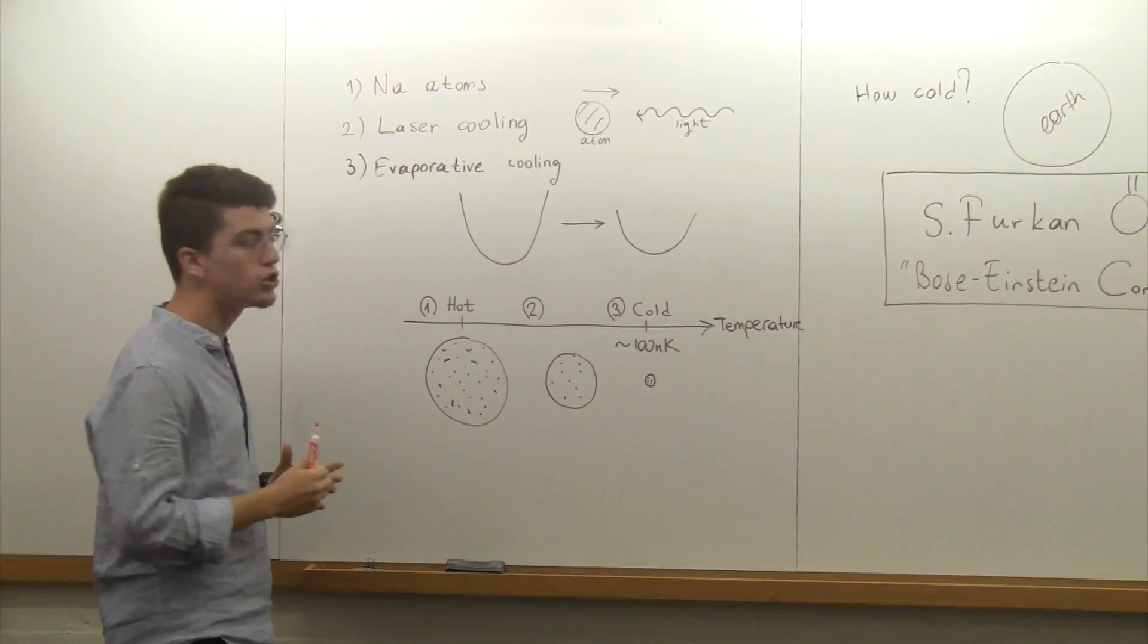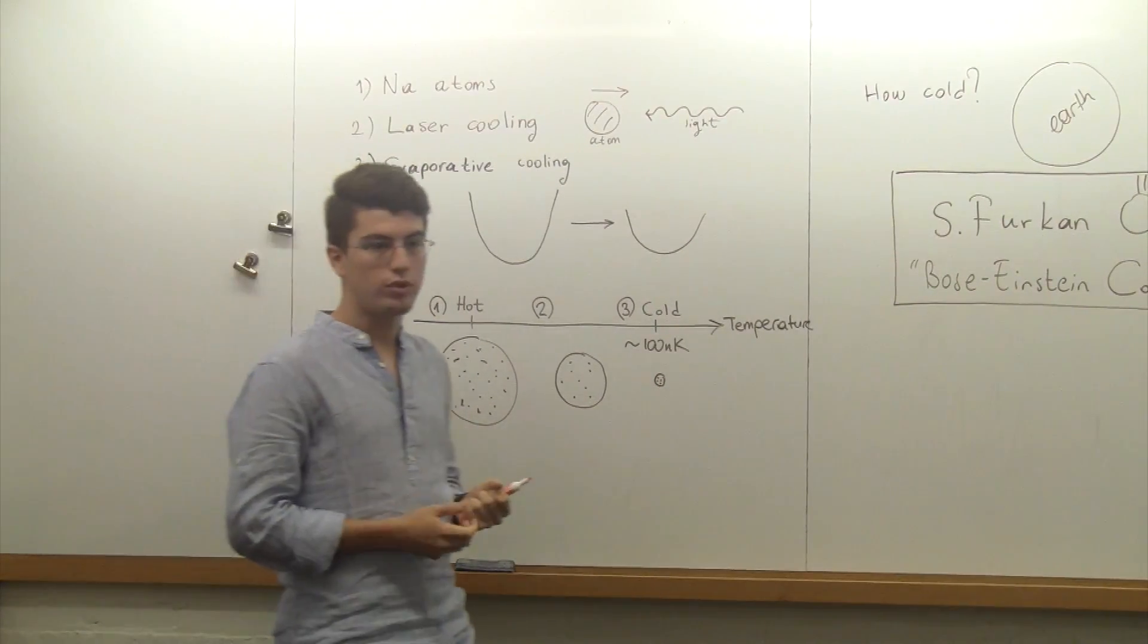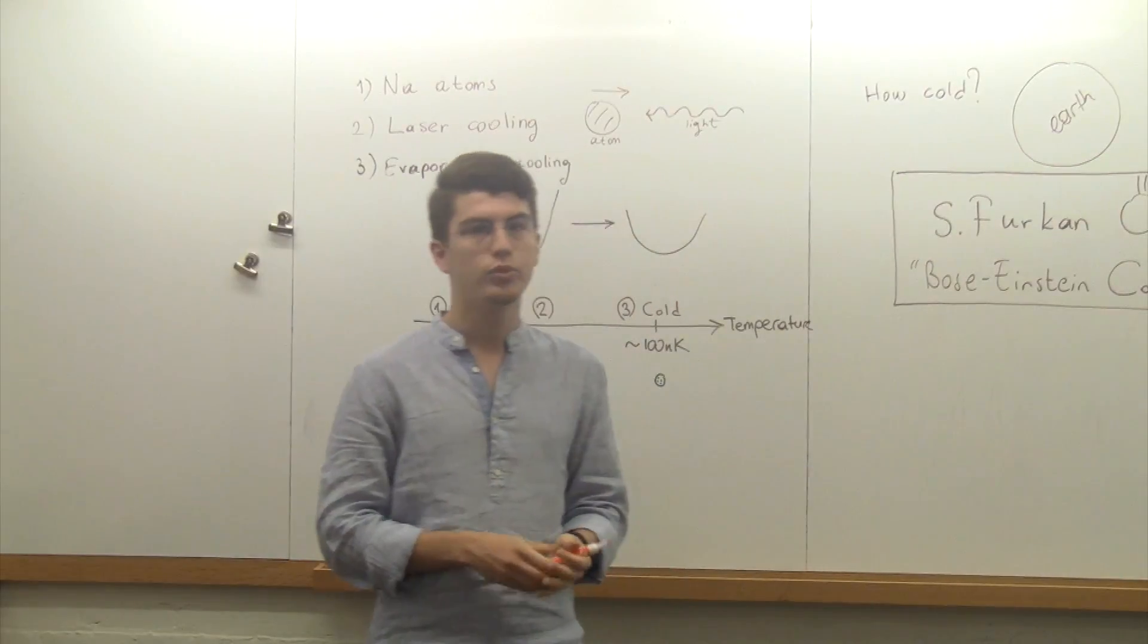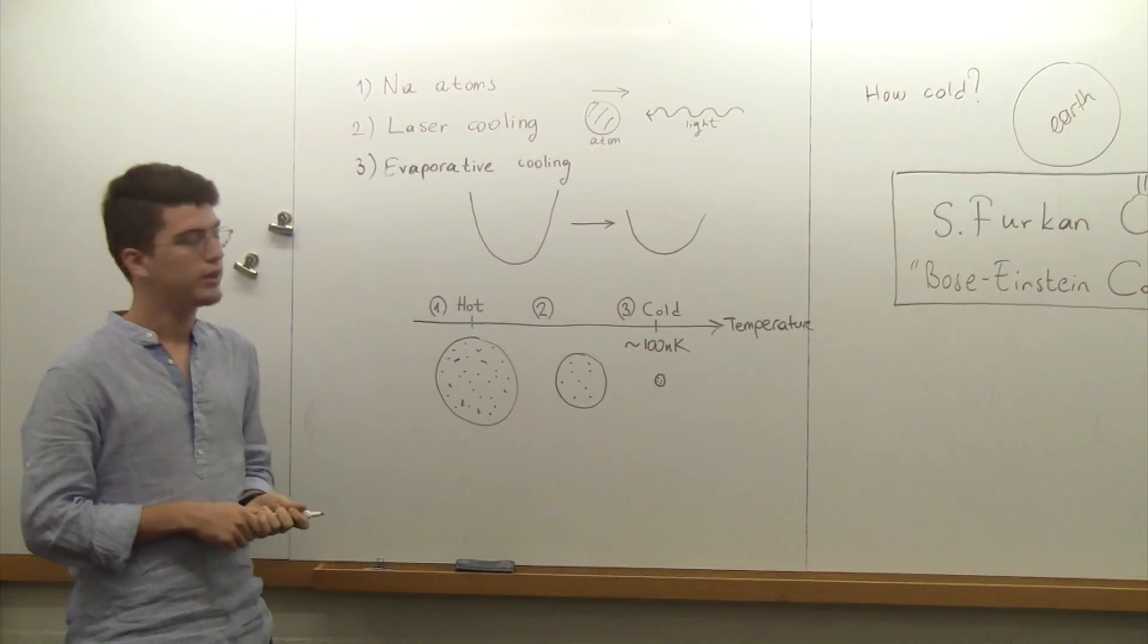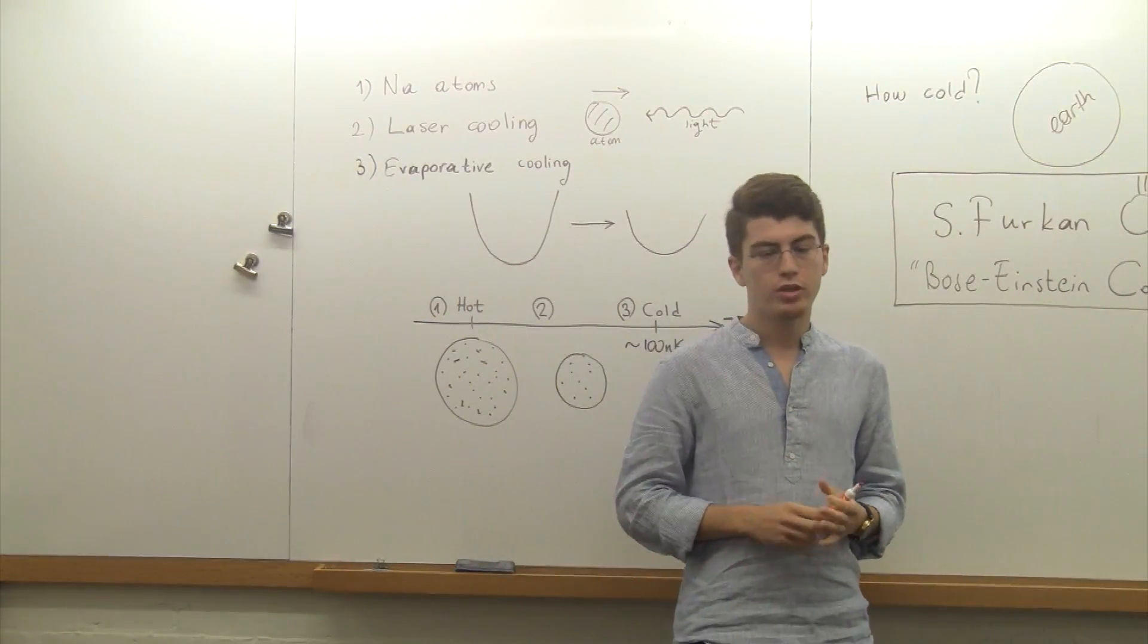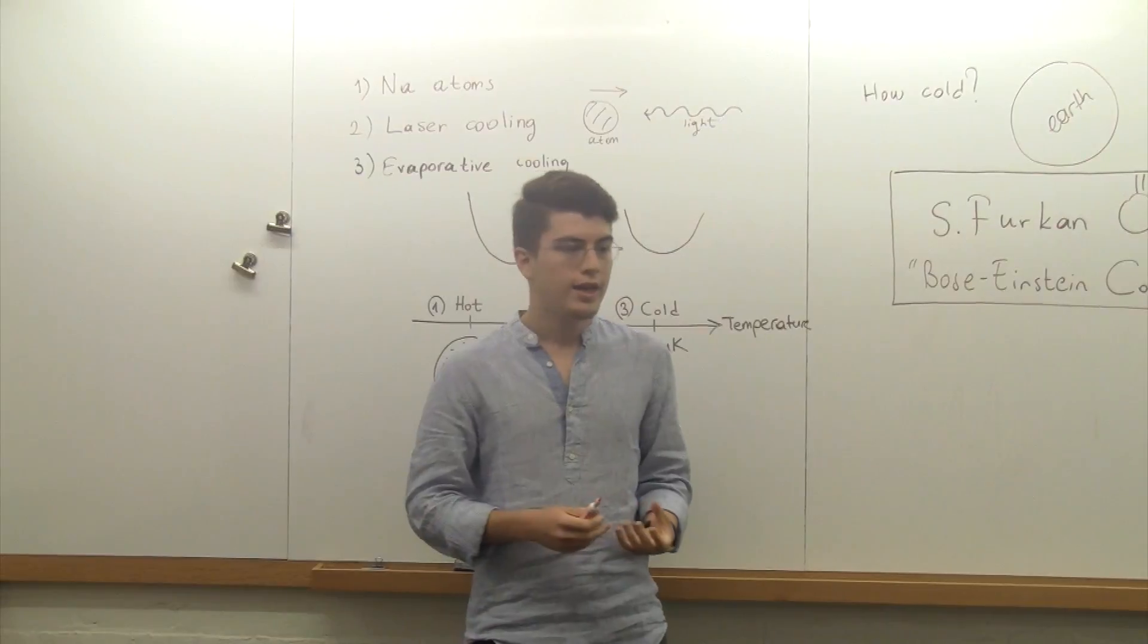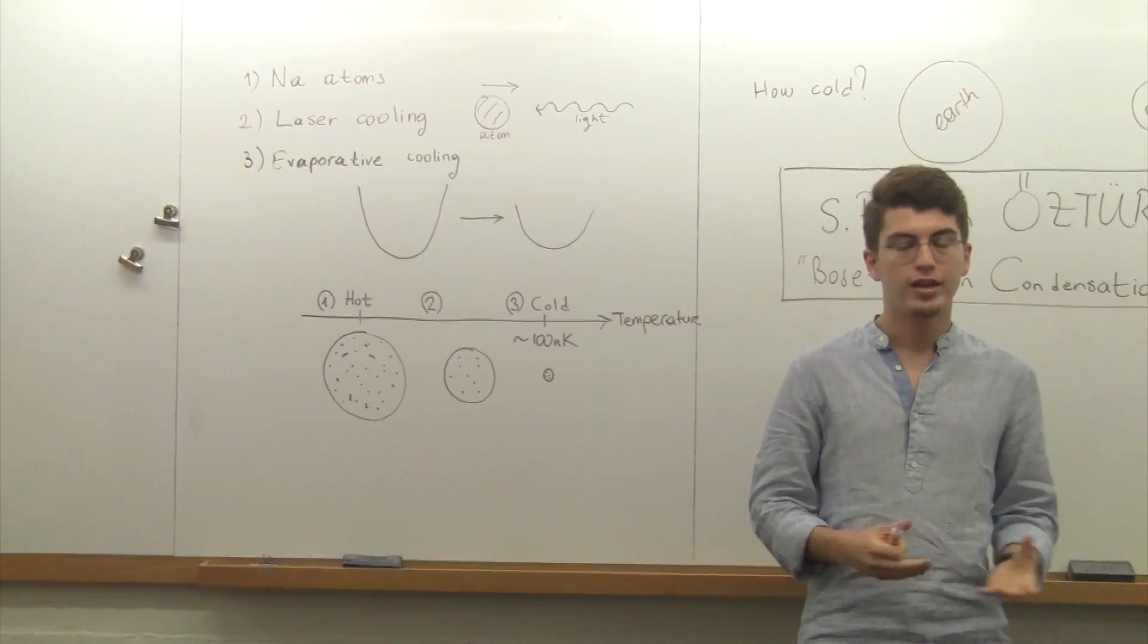But that is not the end. We need to cool it further. The third stage is evaporative cooling. Evaporative cooling is not different than a coffee cup cooling - the coffee in your cup cools the same way. To understand evaporative cooling, we need to understand what temperature is. Temperature is just the energy of atoms, the movement of atoms. If somehow we can take away the atoms that are energetic, the remainder becomes cool.